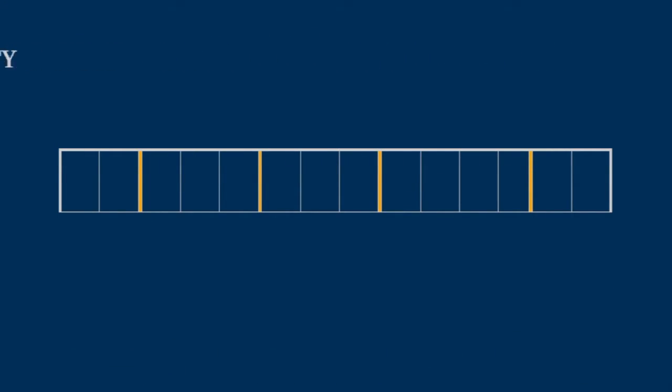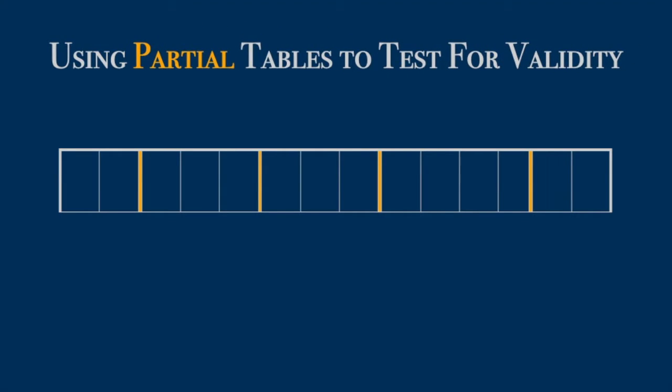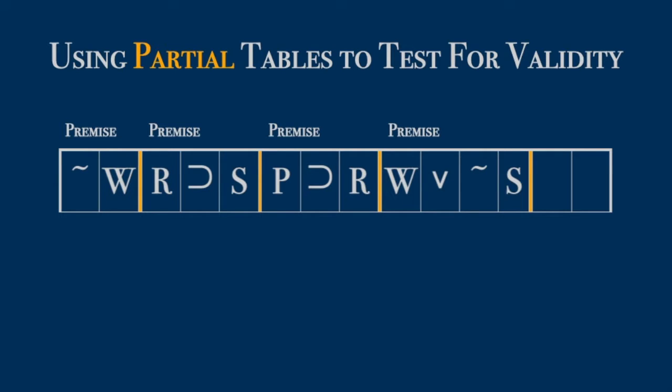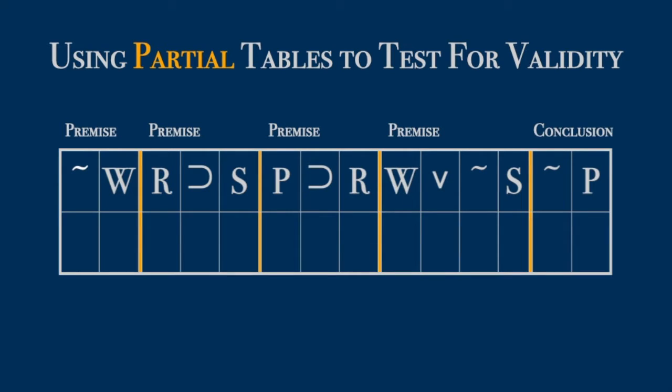Learn to use a partial table to test for validity—it saves a ton of time. Place your argument across the top of the table with your conclusion at the right, then add a single row to keep track of your T's and F's.